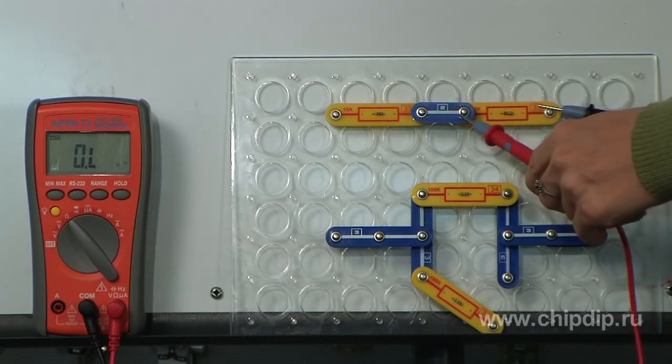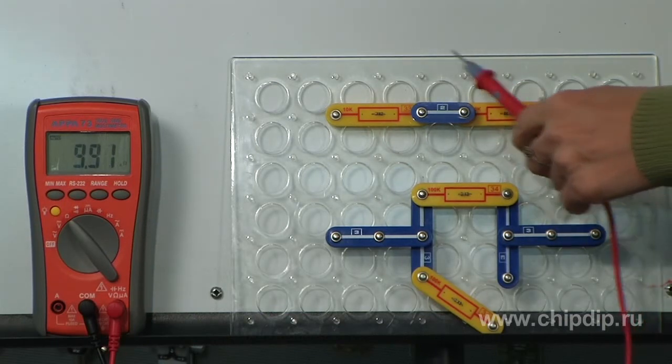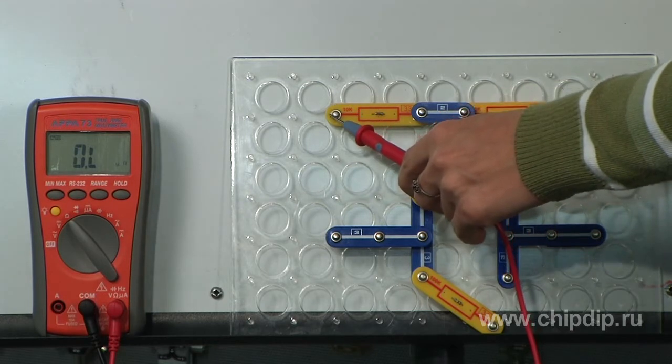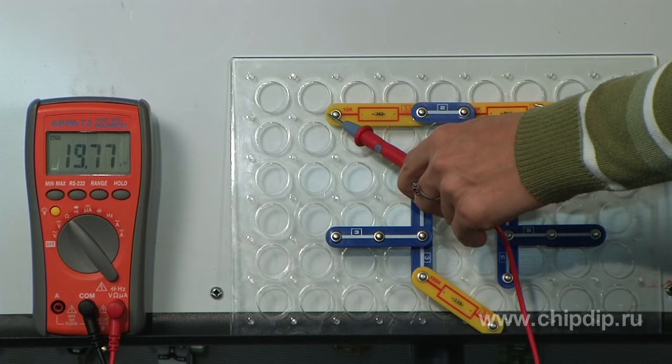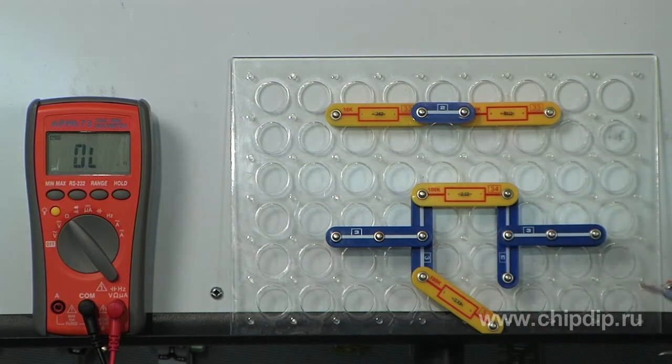For example, if you take two resistors with a resistance of 10 kOhms each and connect them in series, the total resistance will be equal to 20 kOhms.